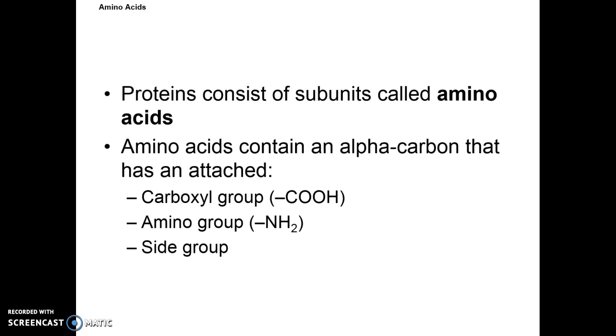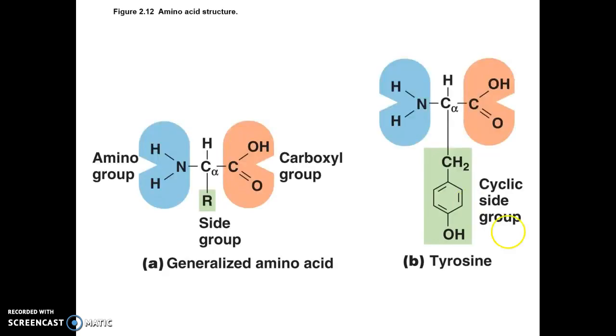That's why most bacteria make their own amino acids and they build them. Proteins consist of subunits called amino acids. And amino acids contain an alpha carbon that has an attached carboxyl group, amino group, and side group. And so we see the cyclic group right here. This is tyrosine. What's fun about tyrosine is while it is an essential amino acid, if you get tyrosine in too high of dose, it turns into a neurotoxin. So if you overdose on tyrosine or phenylalanine, you can get headaches or have some type of brain damage.